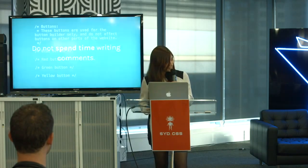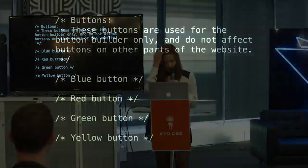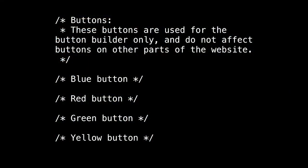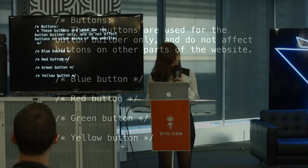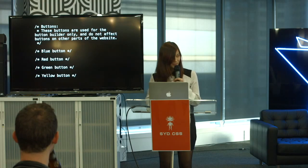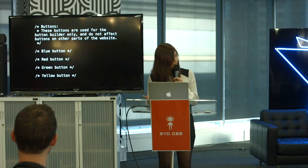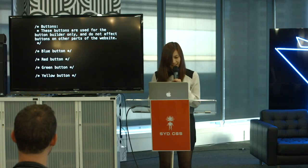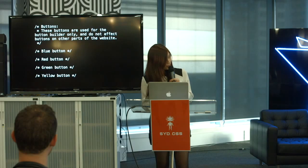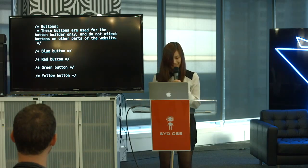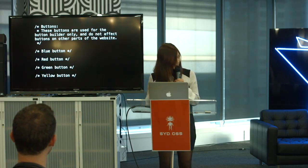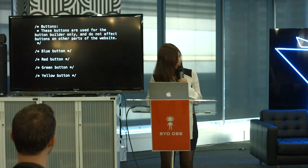I'm going to revisit the buttons file I was talking about earlier. Just a few small changes can make this a lot more understandable for someone else. I've put 'buttons' at the top of the file because there's a possibility we might rename it to something else, so a simple title can do the job. A sentence just explaining where you might find what's in this file — just a brief overview. And then I've put the obvious names for the buttons and their colors: blue, red, green, yellow. So now anyone knows which code is relevant to the red button.